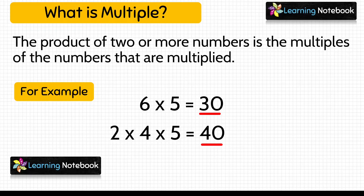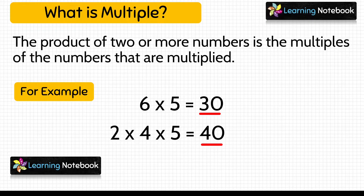Let's take another example: 2 into 4 into 5 equals 40. Here the product 40 is the multiple of 2, it is the multiple of 4, and 40 is also the multiple of 5. So remember that the product of two or more numbers is the multiple of the numbers that are being multiplied.